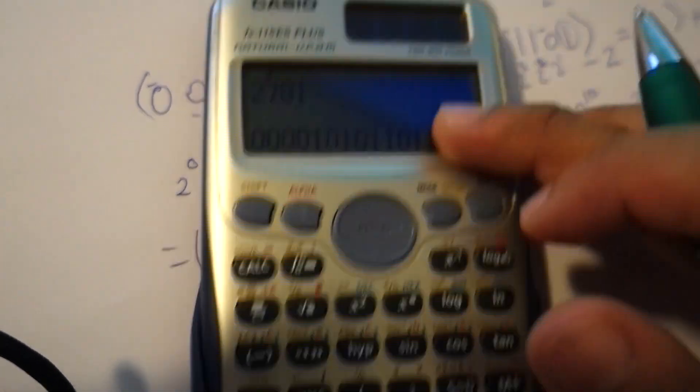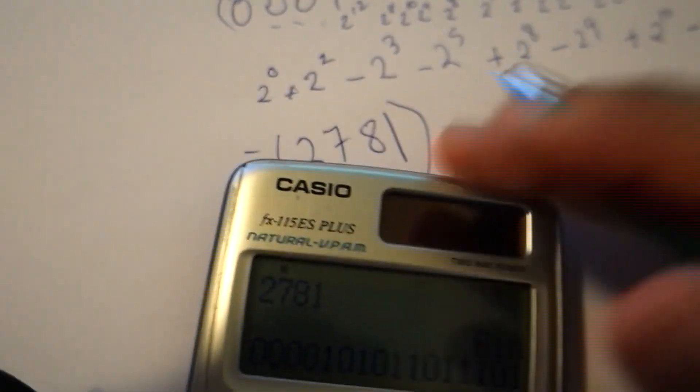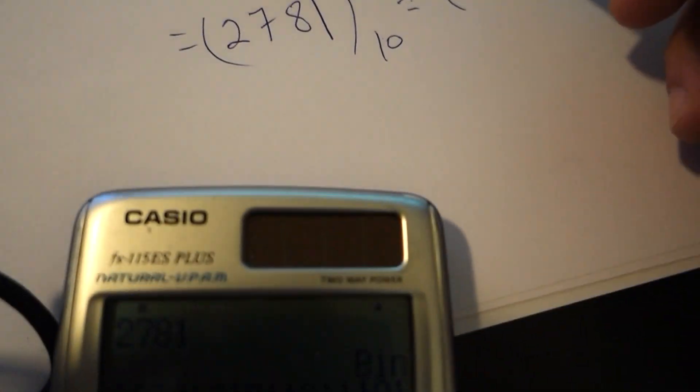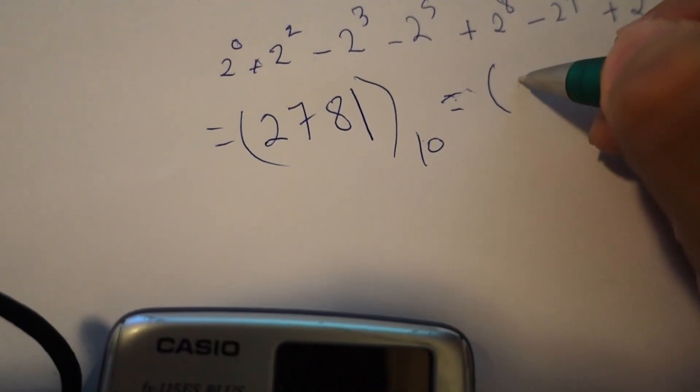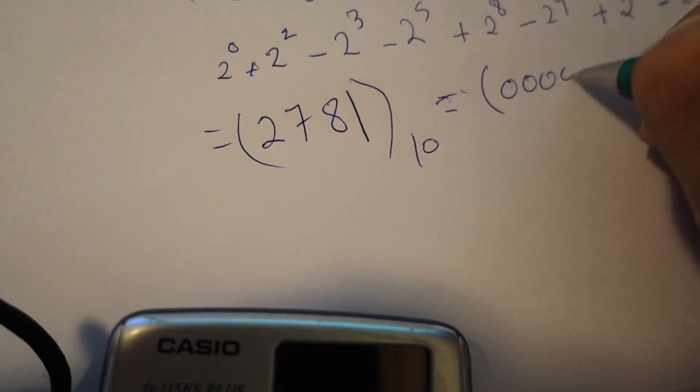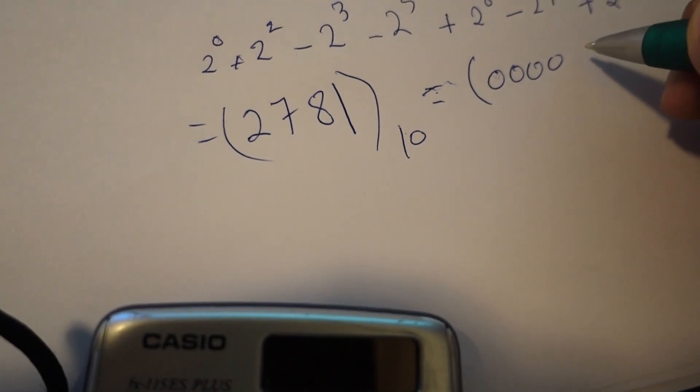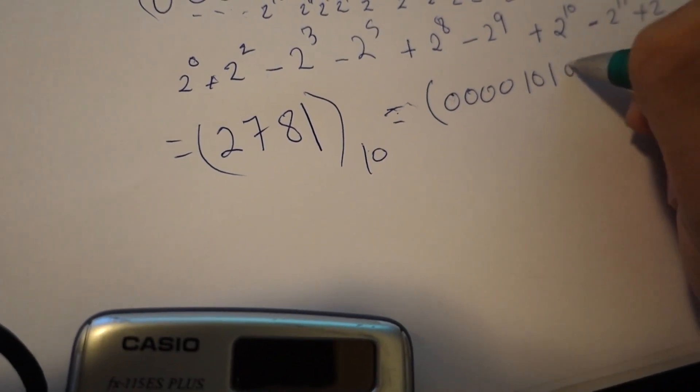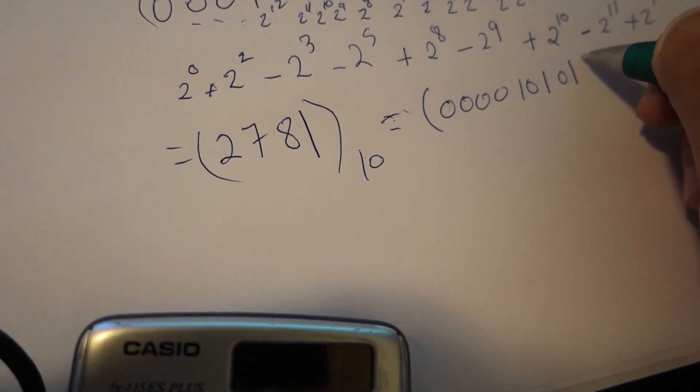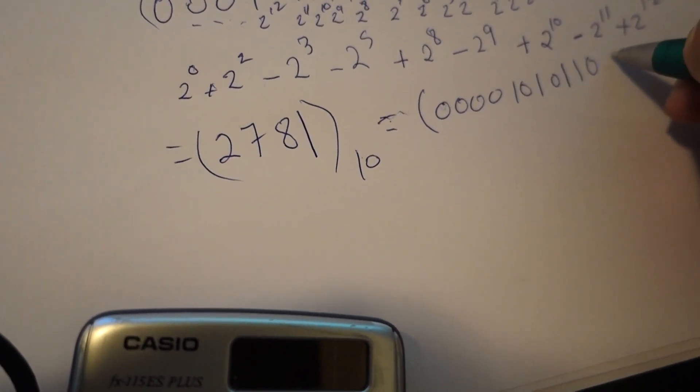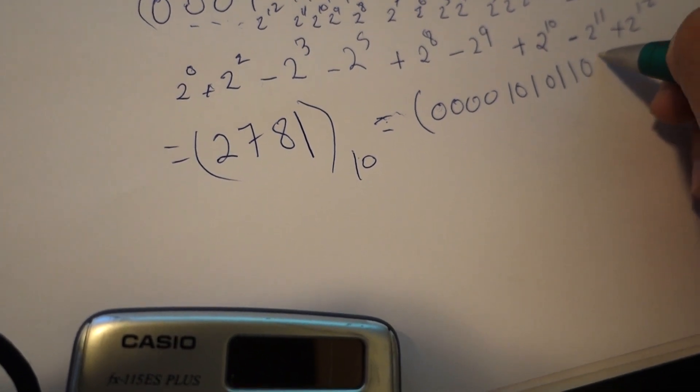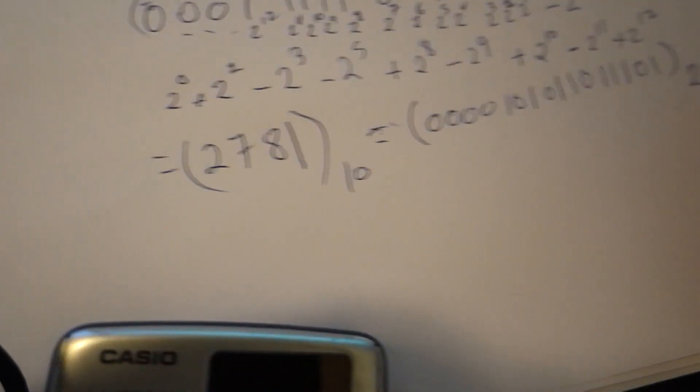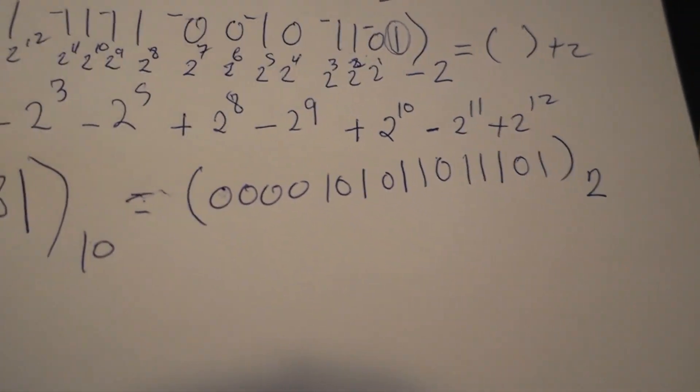If I take 2781 in decimal and convert it to binary, I get this number in base 2.